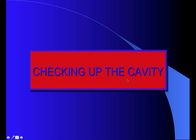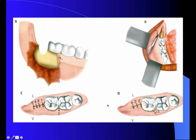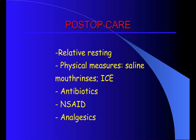Afterwards, the next step is to check the cavity to find out if there is any piece of bone or root remaining in the socket, which could lead to infection if not removed. The final step is hemostasis of the cavity followed by suture, which may require four or five stitches depending on the size of the flap previously made to extract the molar.